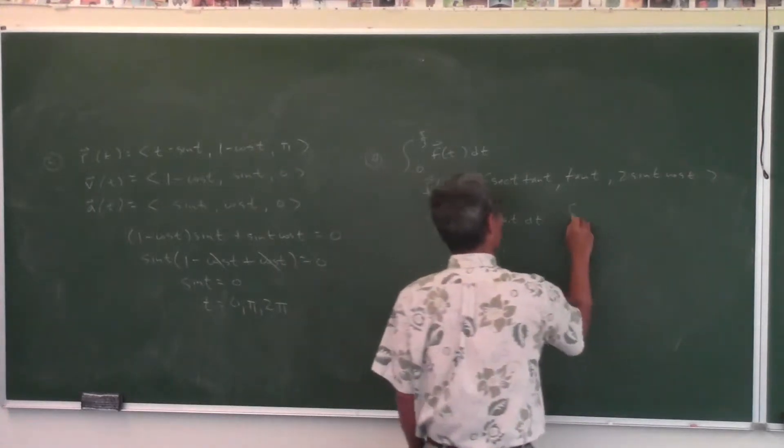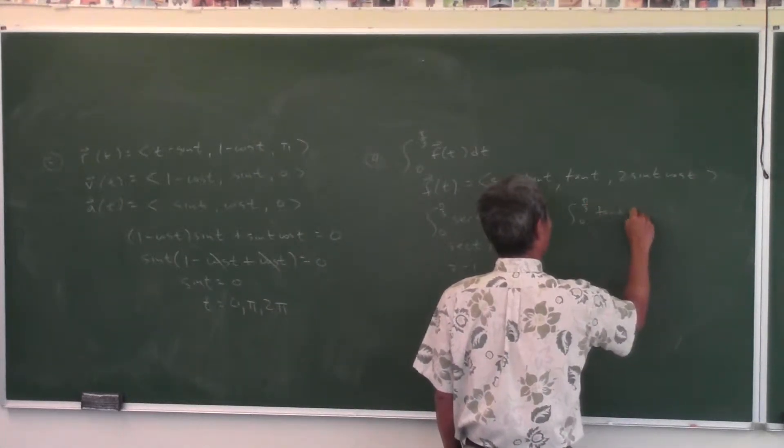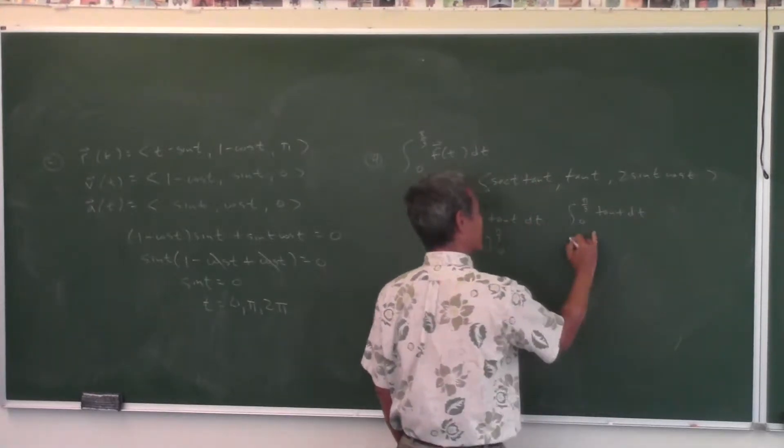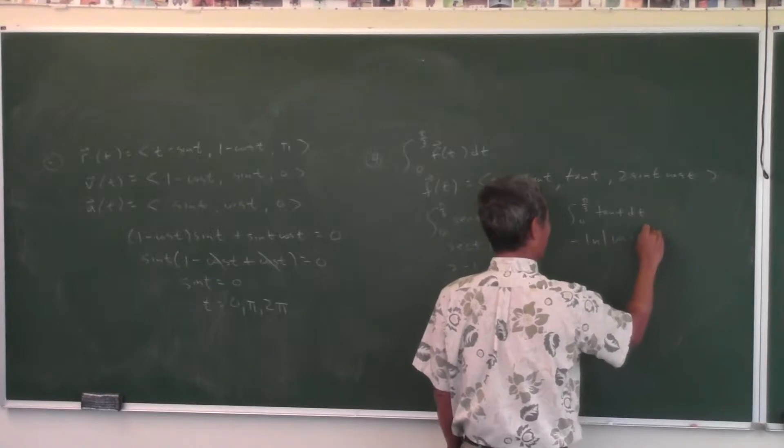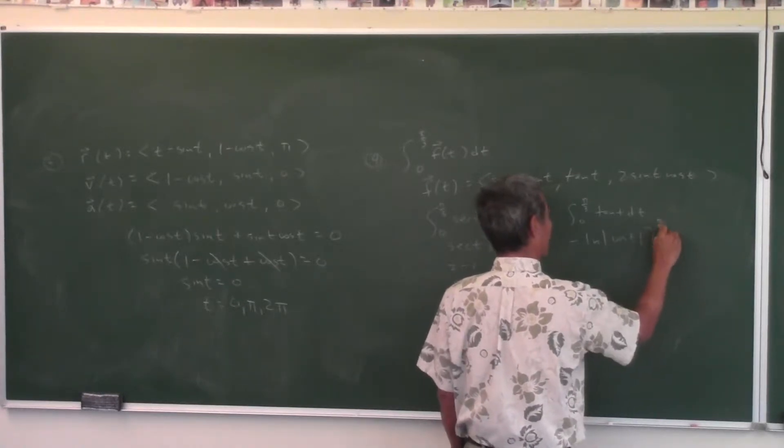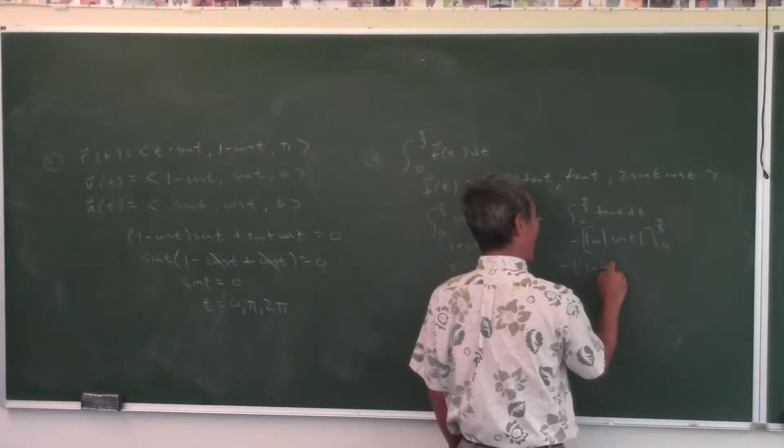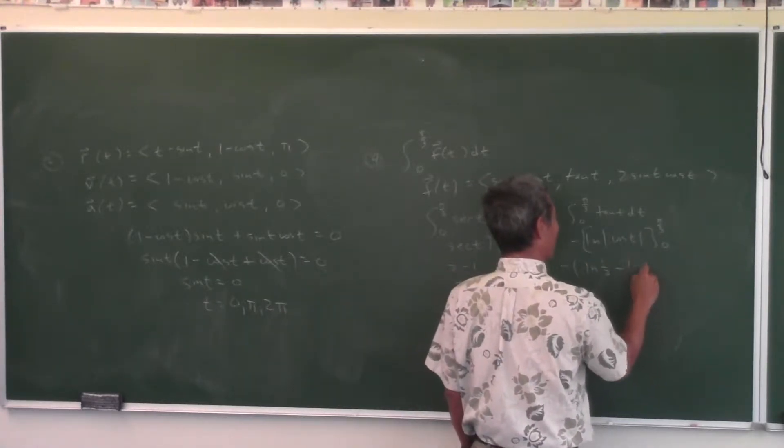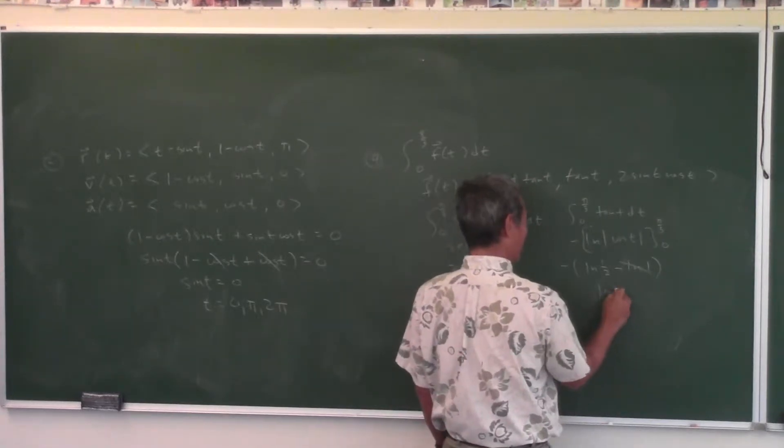Now, the second component. What's the integral from zero to pi over three of tangent t? What's the antiderivative of tangent t? Negative ln cosine divided by 4. Okay, correct. From zero to pi over three, factor out the constant, and so you get natural log half minus natural log of one, which of course is zero. So isn't that the same thing as natural log two?